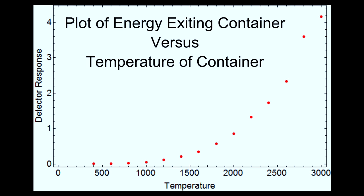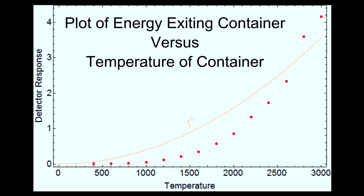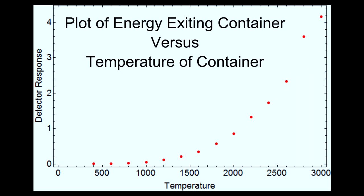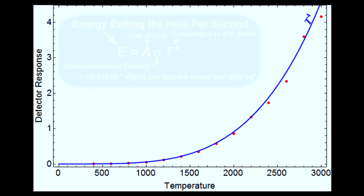They plotted their data with detector response on the y-axis and temperature on the x-axis. The red dots show their measurements. Then they tried to fit the data to various curves. The data didn't fit a T-squared curve. It didn't fit a T-cubed curve. There was a very good match with a T-to-the-fourth curve. So they developed an empirical formula for the total amount of radiation emerging from a hole of area A.